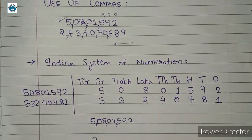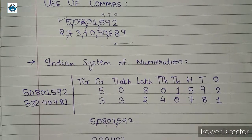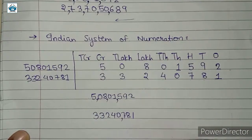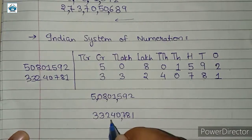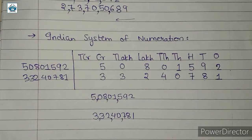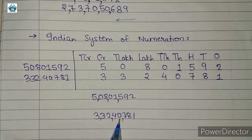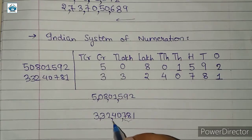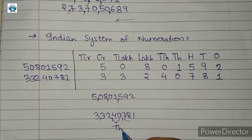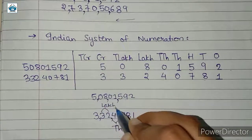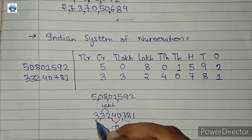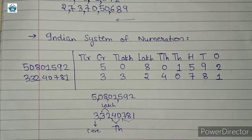Now let us use commas to write this number. The first comma comes after 3 digits from the right, then at a gap of 2 digits. So we read this number as 3 crore 32 lakh 40,781. This portion comes under thousands, this under lakhs and ten-lakhs, and here we have crores.